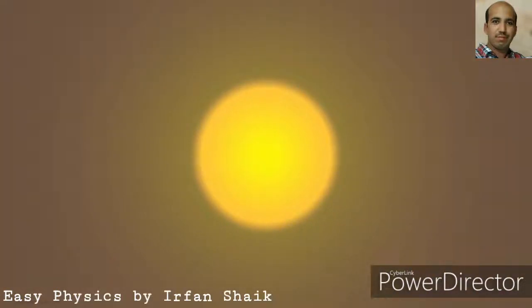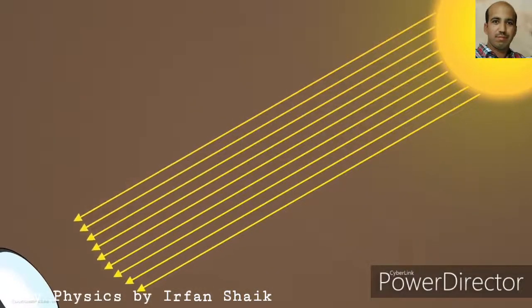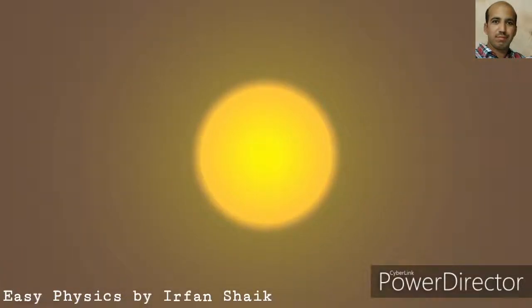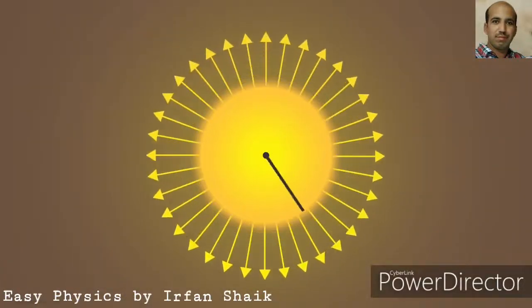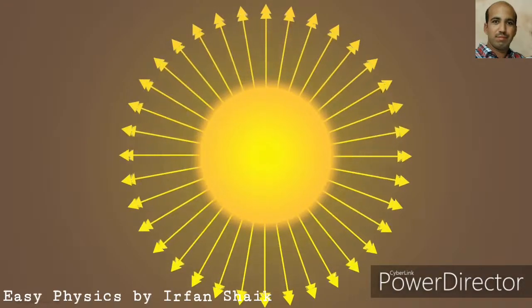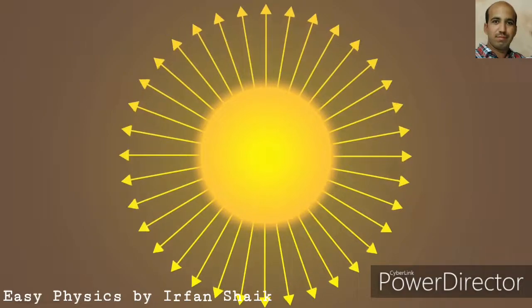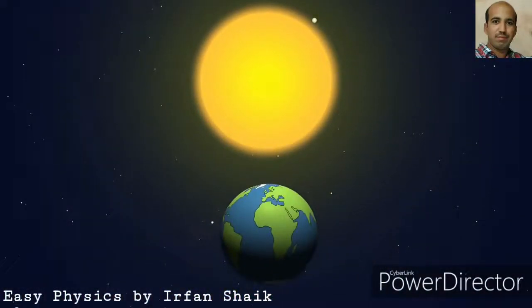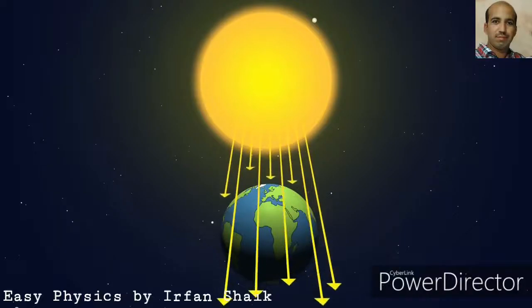Let's take the sun as an object. A beam of light rays coming from the sun — all these light rays are almost parallel, because the sun emits light rays radially, and as the sun is very far from the earth, the rays coming from the sun are considered to be parallel.